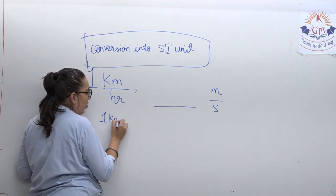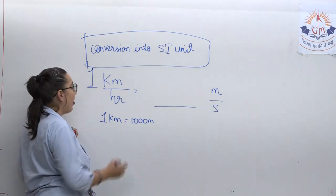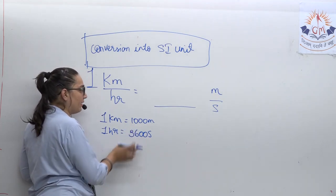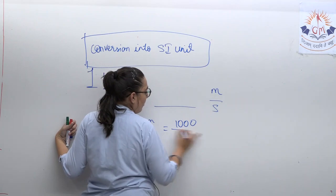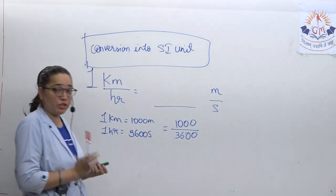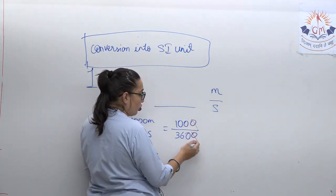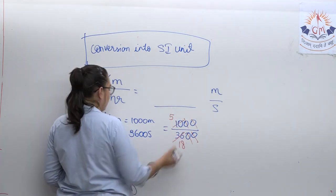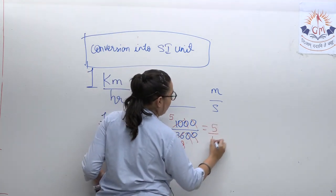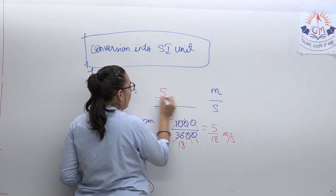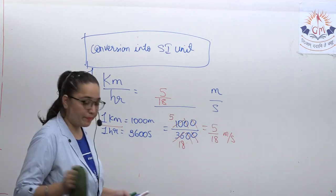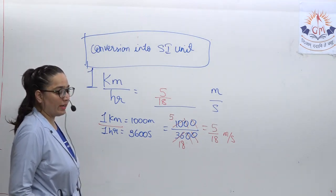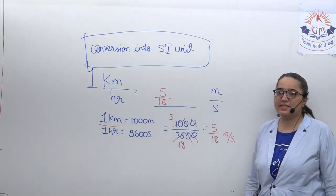You know that one kilometre is one thousand metres, and one hour has three thousand six hundred seconds. So divide the two: one thousand upon three thousand six hundred. Cancelling zeros, you get 5 by 18. Therefore, 1 kilometre per hour equals 5 by 18 metres per second. This is a key concept — note it. The reverse gives 1 metre per second in km/hr.